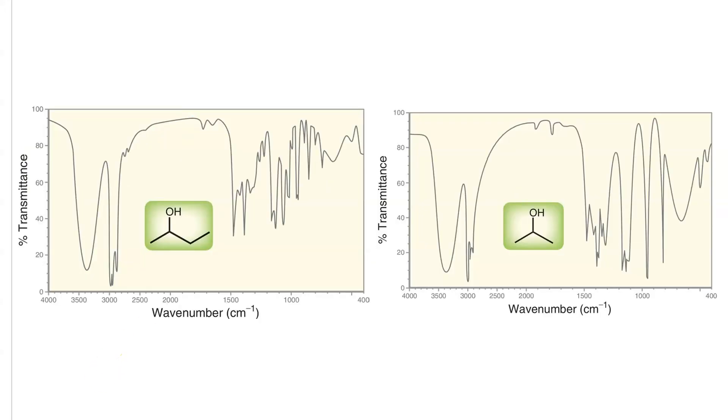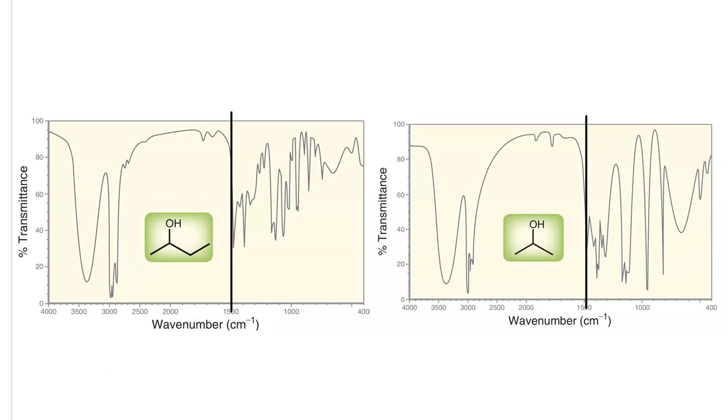Here are the IR spectra of two different alcohols. We've got 2-butanol, and isopropanol. So the first thing we want to do is draw a line at 1500 wavenumbers vertically. To the left of 1500 wavenumbers is the diagnostic region. To the right is the fingerprint region.